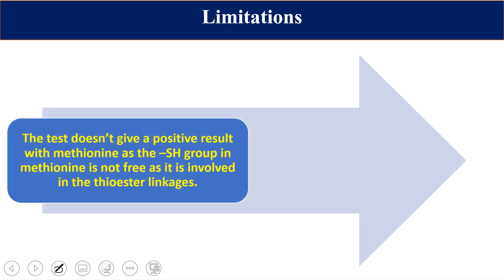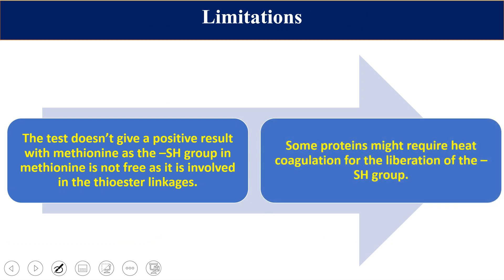A limitation of this test is that it does not give a positive result with methionine or cystine, as the SH group of methionine is part of a thioether bond and the SH of cystine is in a disulfide bond — neither is freely available for reaction. Also, some proteins may require heating or heat coagulation for liberation of the SH group. These are the main limitations of this test.